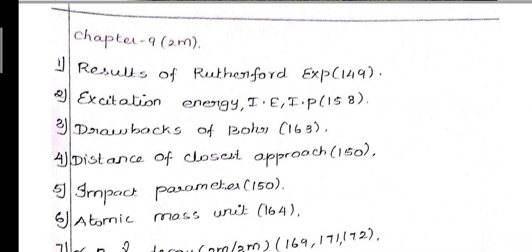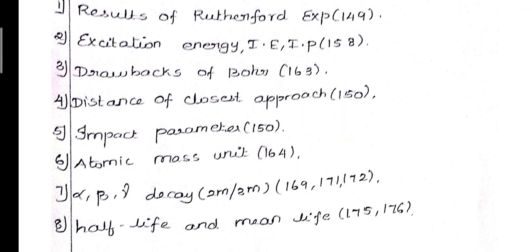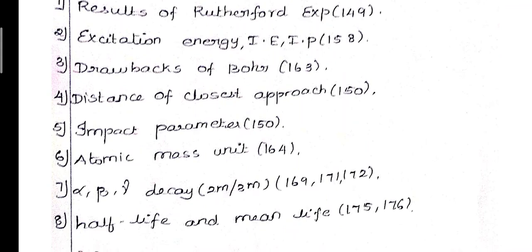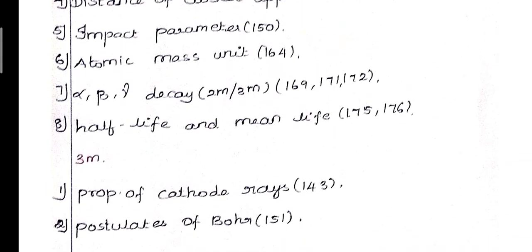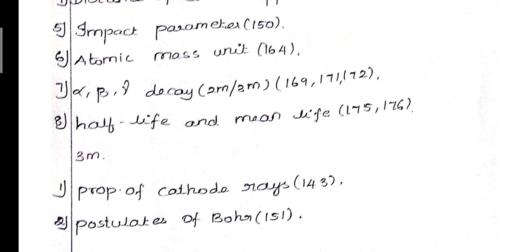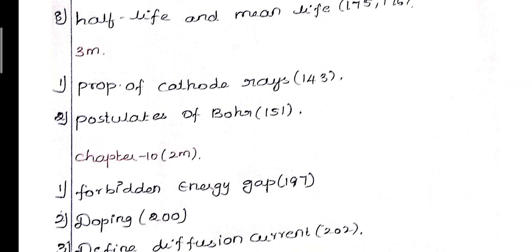Chapter 9 2-mark questions: 1st question - results of Rutherford experiment, page 149. 2nd question - excitation energy, ionization energy and ionization potential, page 158. 3rd question - drawbacks of Bohr model, page 163. 4th question - distance of closest approach, page 150. 5th question - impact parameter, page 150. 6th question - atomic mass unit, page 164. 7th question - alpha, beta, gamma decay, pages 169, 171, 172. 8th question - half-life and mean life, pages 175-176. 3-mark: properties of cathode rays, page 143. 2nd question - postulates of Bohr model, page 151.